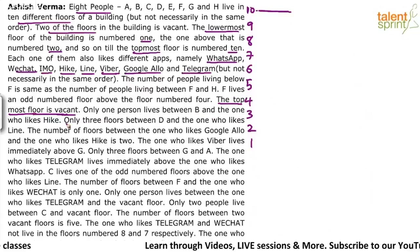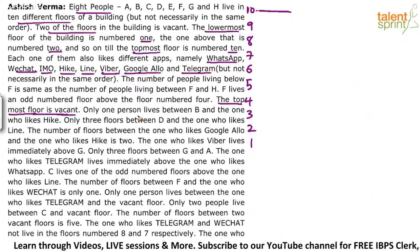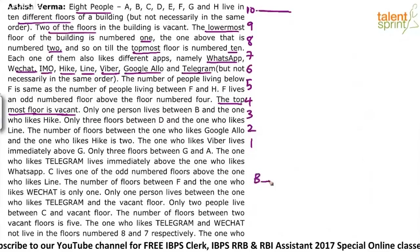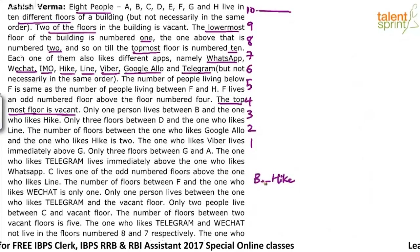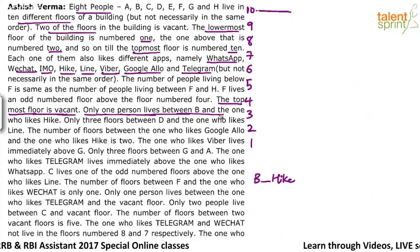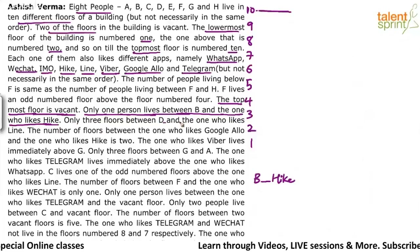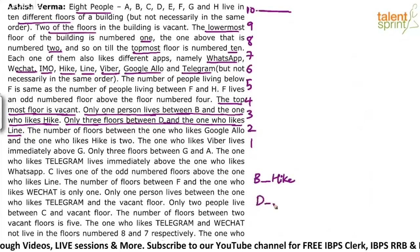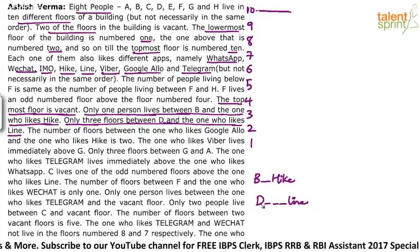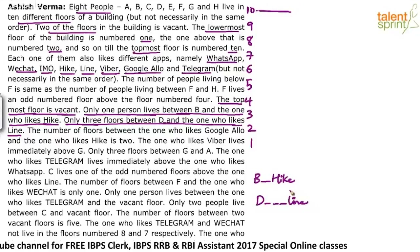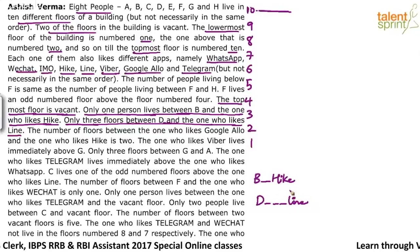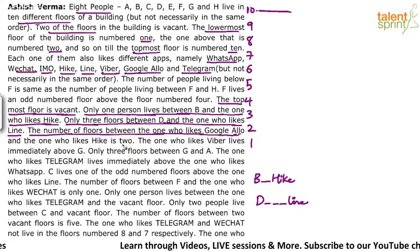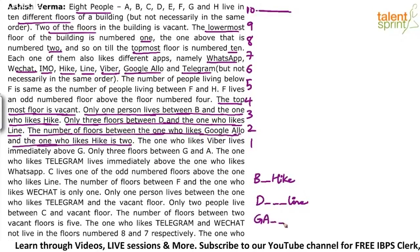Only one person lives between B and the one who likes Hike. So between B and Hike there is only one person — pictorially, there's a gap between B and Hike. Only three floors between D and the one who likes Line: D — — — Line, remembering the sequence can go either way. And the number of floors between the one who likes Google Allo and the one who likes Hike is two.